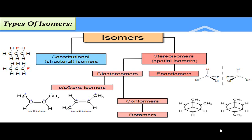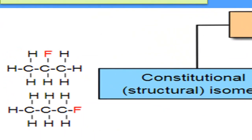Constitutional isomers وہ type of isomers ہے جس میں molecules کا molecular formula same ہوتا ہے لیکن bonding patterns different ہوتے ہیں۔ مثال کے طور پر propane کے دو molecules میں fluorine atom کی position different ہے — ایک میں central carbon پر اور دوسرے میں different position پر — اس کو positional isomers بھی کہتے ہیں۔